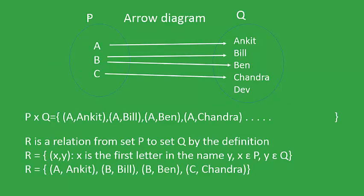Let's look into this example. Here, P is defined by the elements A, B, C and Q is the set containing the elements Ankit, Bill, Ben, Chandra, and Dev. The relation R on sets P and Q is defined such that R consists of elements (X, Y) in which X is the first letter in the name of the Y element, where X is an element of P and Y is an element of Q. So the set R defined by the relation is equal to (A, Ankit), since Ankit starts from A, (B, Bill), (B, Ben), and (C, Chandra).